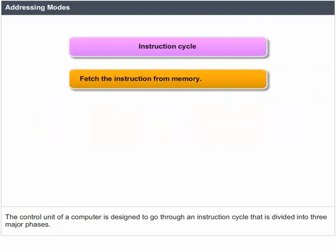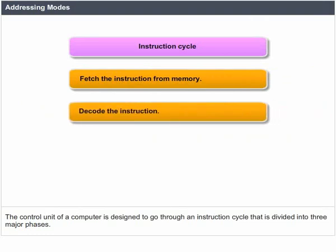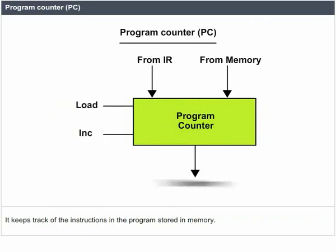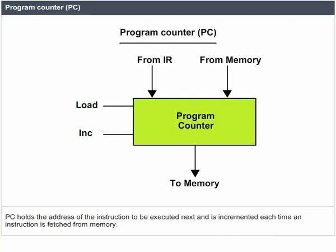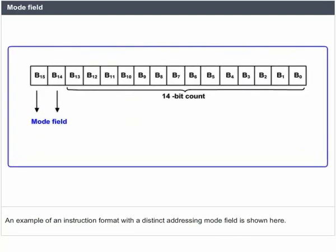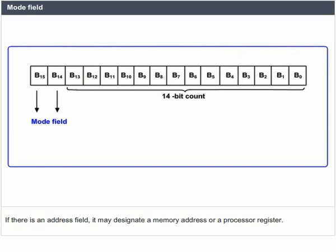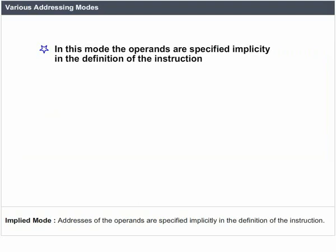The control unit of a computer goes through an instruction cycle divided into three major phases: fetch the instruction from memory, decode the instruction, and execute the instruction. The program counter (PC) keeps track of instructions in the program stored in memory; it holds the address of the next instruction to be executed and is incremented each time an instruction is fetched. The mode field is used to locate the operands needed for the operation; there may or may not be an address field in the instruction. If there is an address field, it may designate a memory address or a processor register.